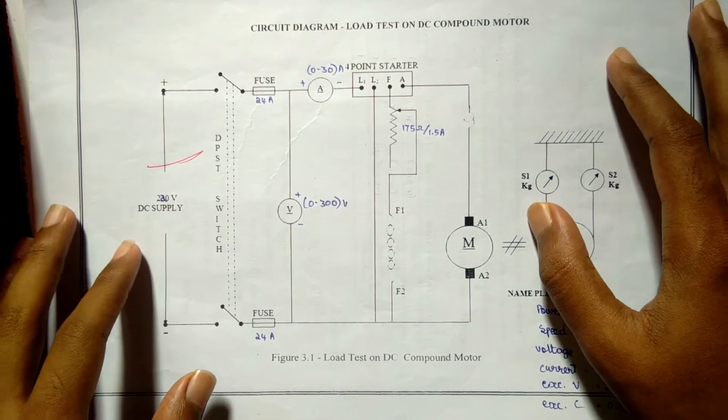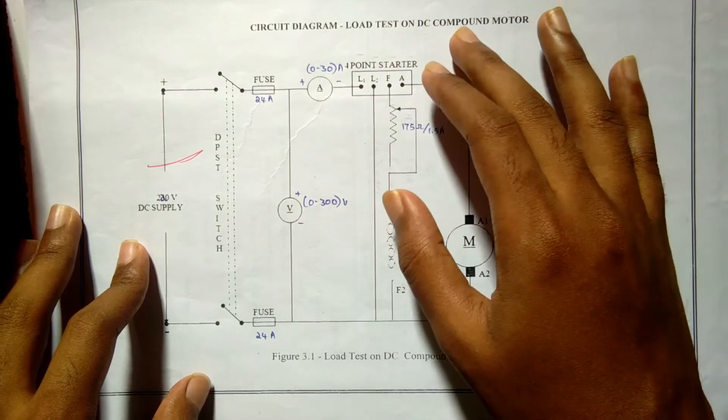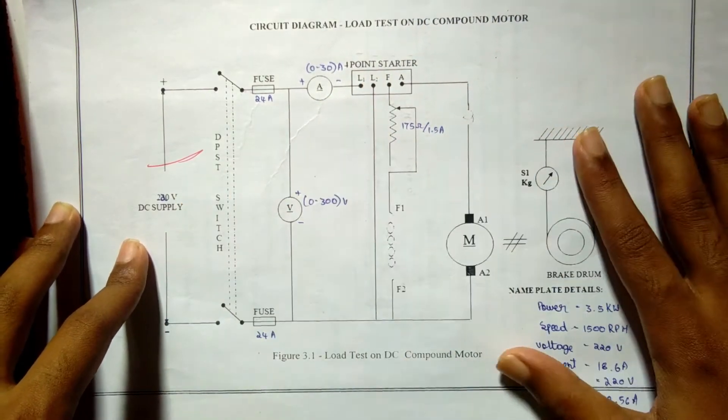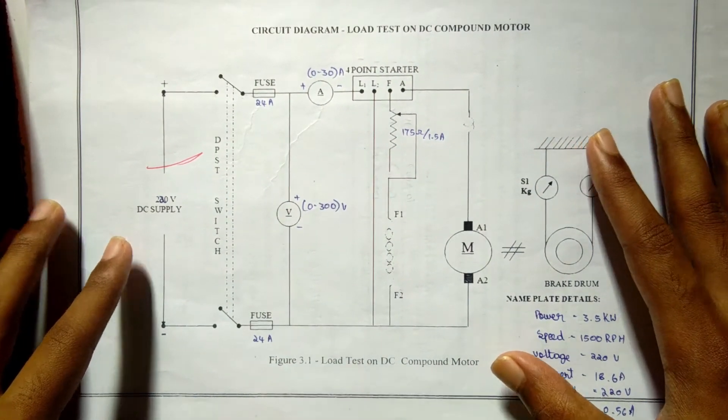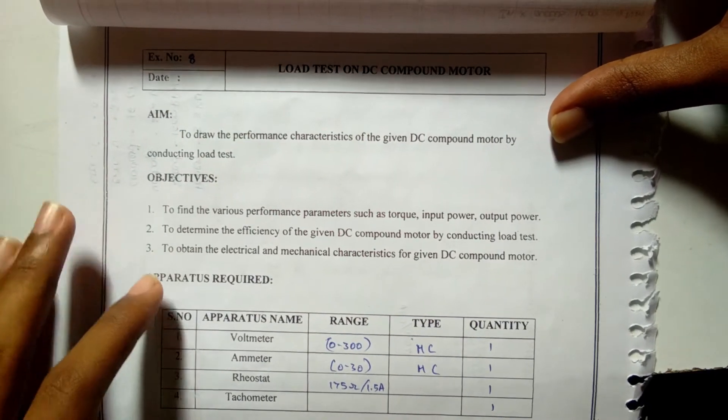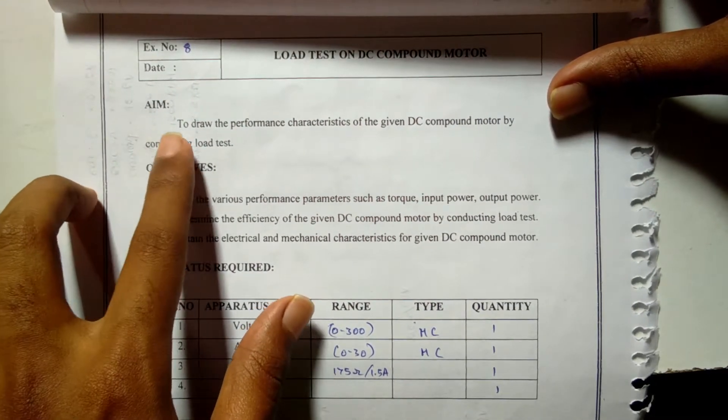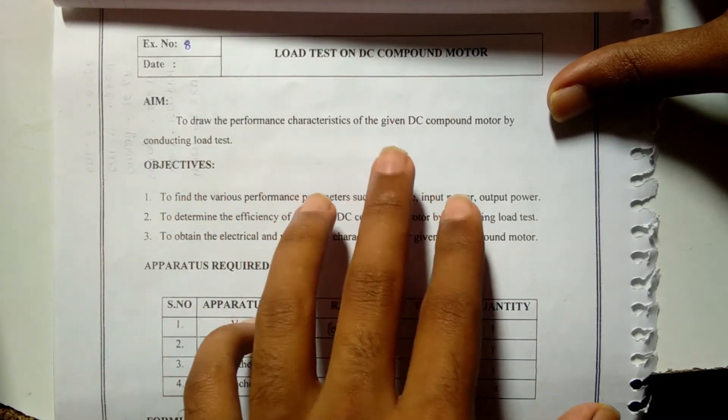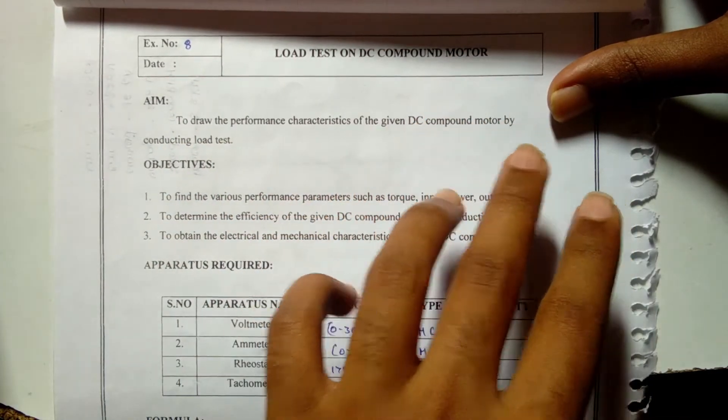Hi guys, in this experiment we're going to see about a load test on DC compound motor. This is the circuit diagram for this experiment. The name of the experiment is to draw the performance characteristics of the DC compound motor by conducting load test.